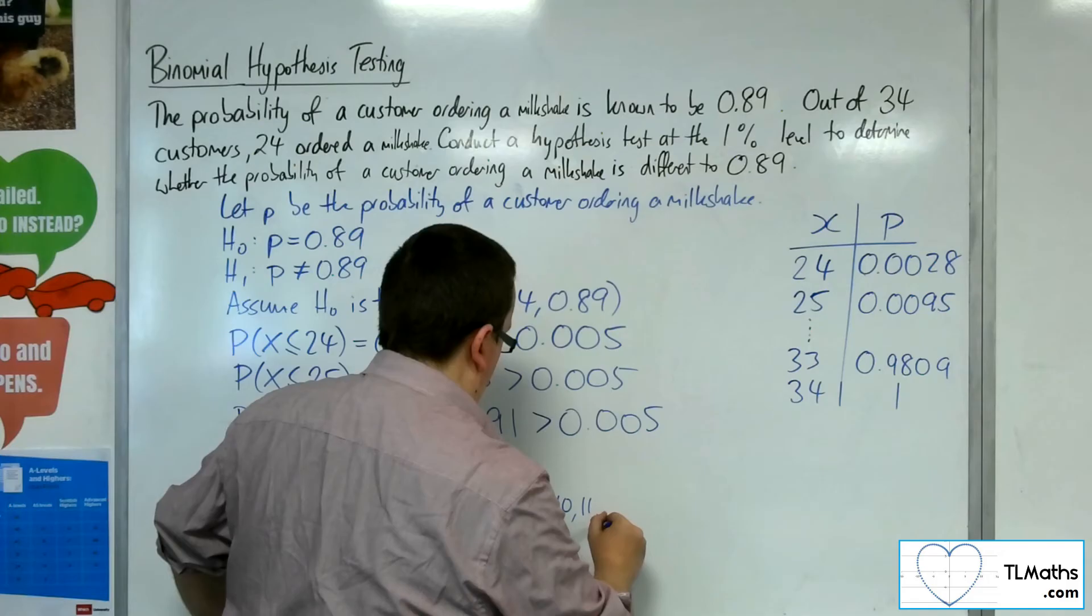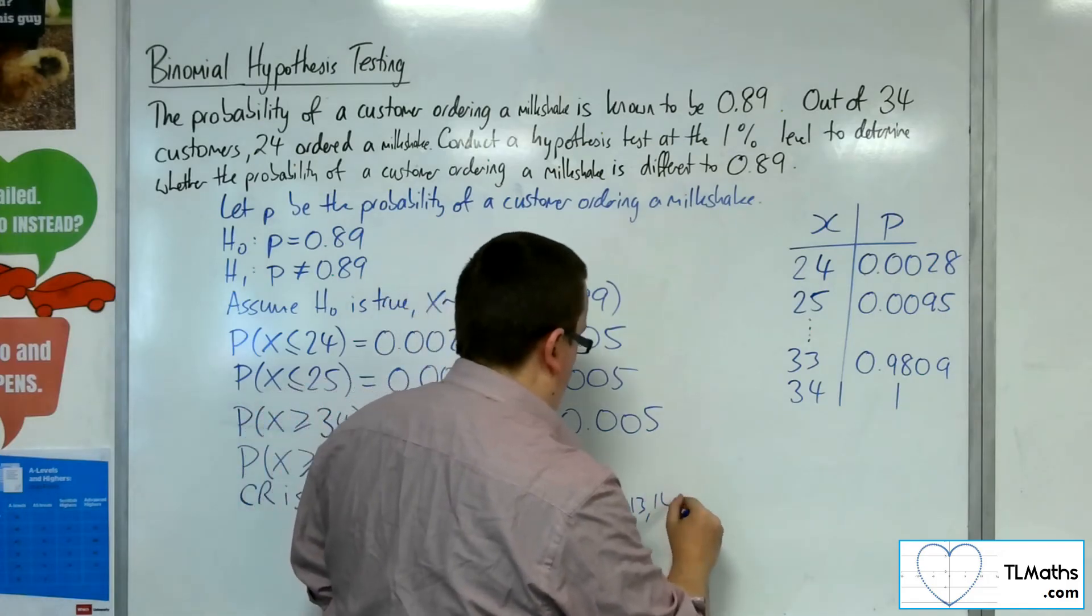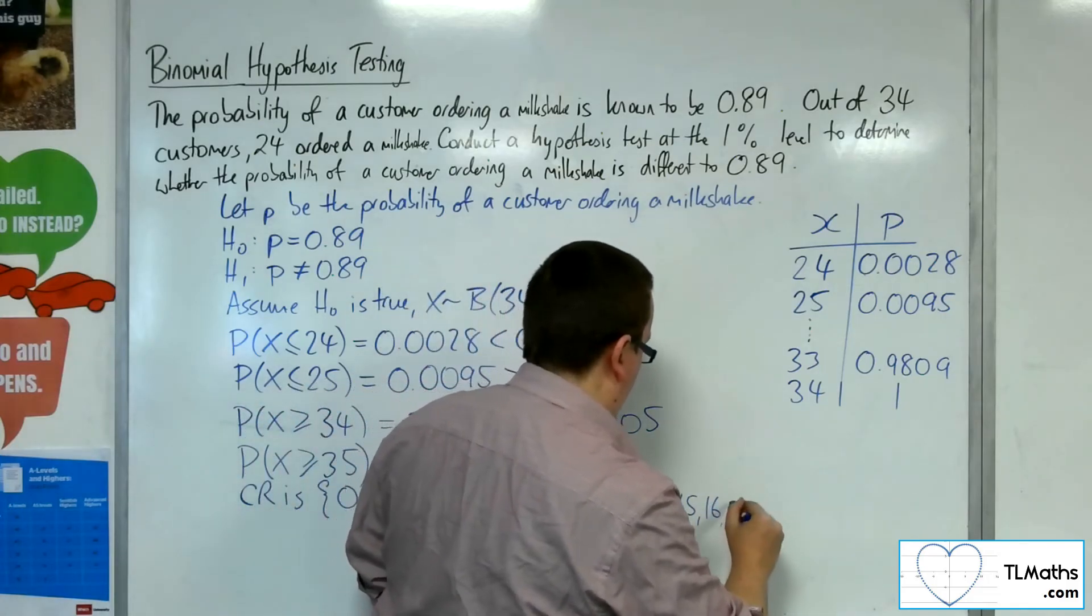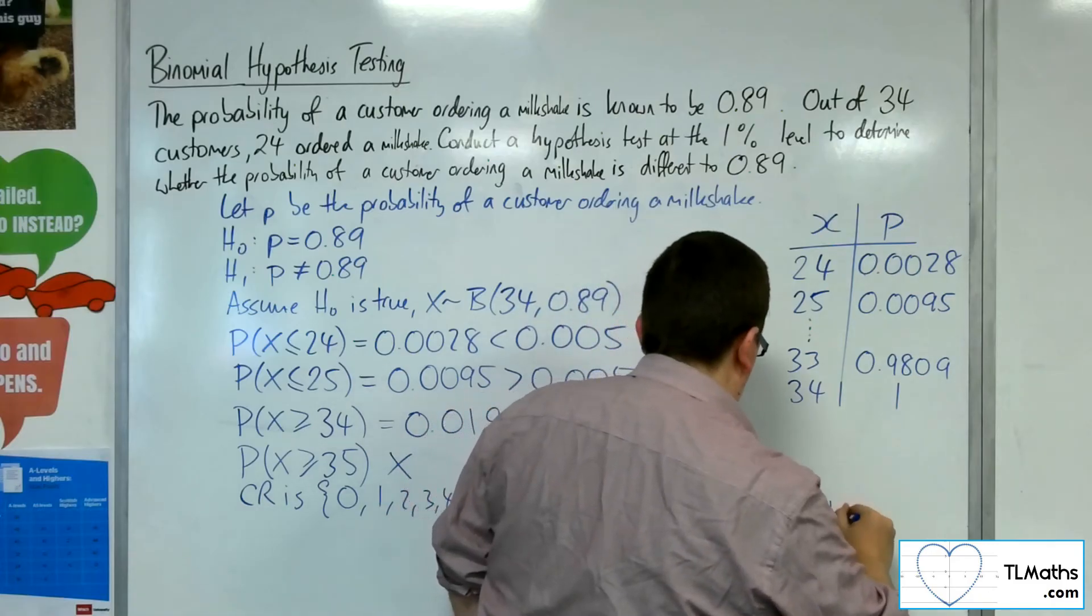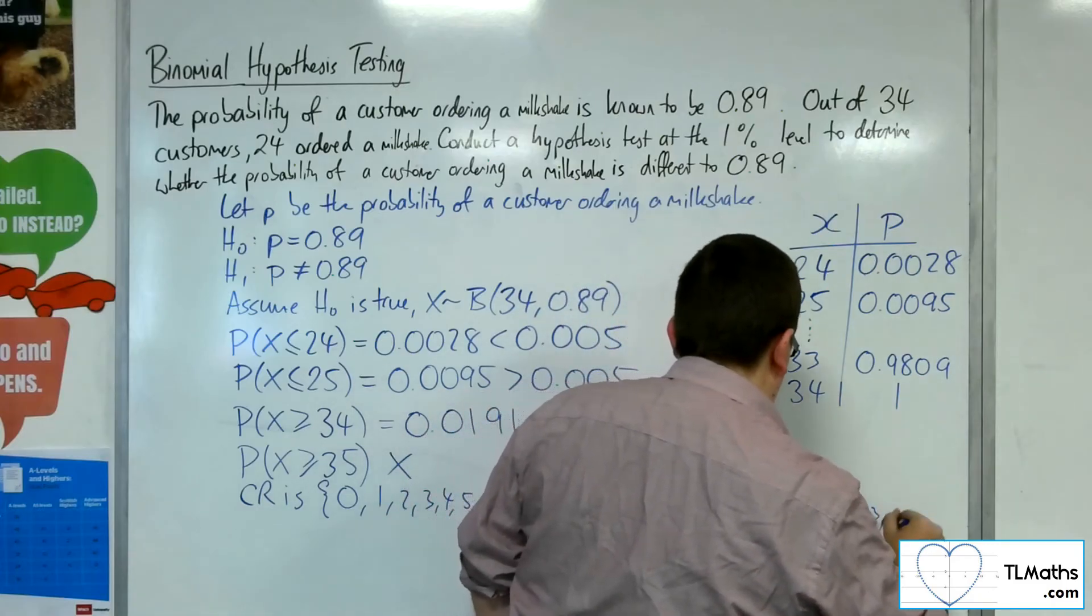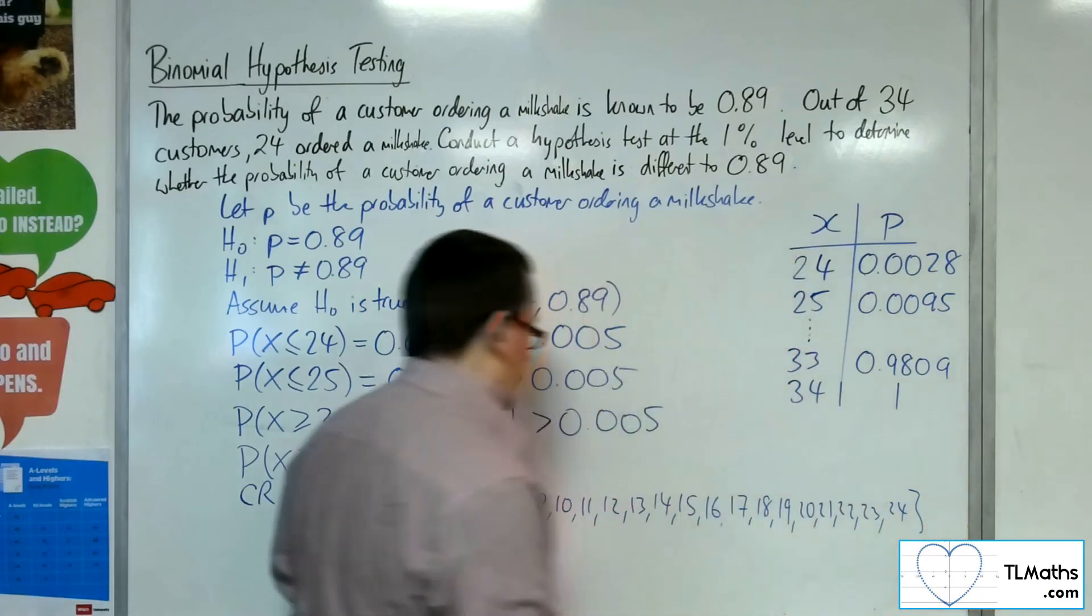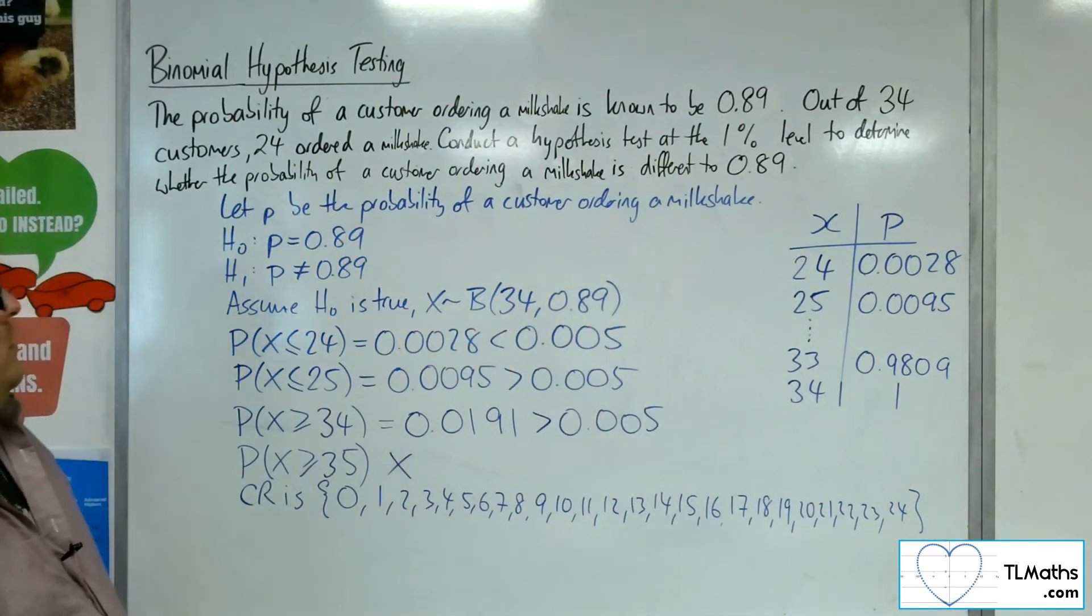9, 10, yes, I am going all the way here. 17, 18, 19, 20, 21, 22, 23, 24. That's our critical region.